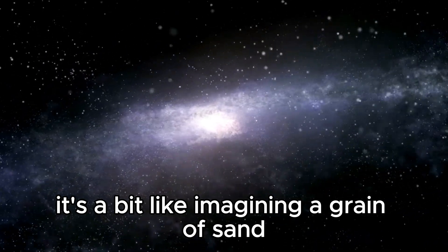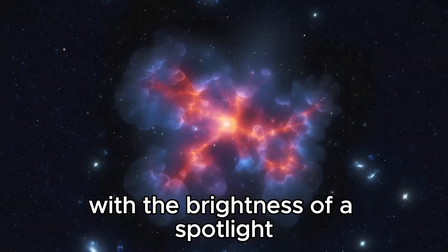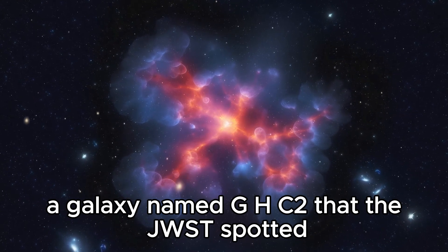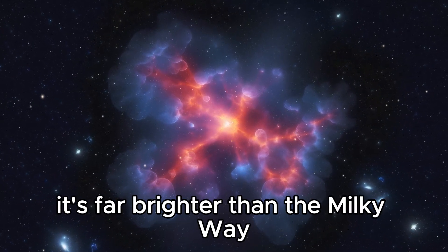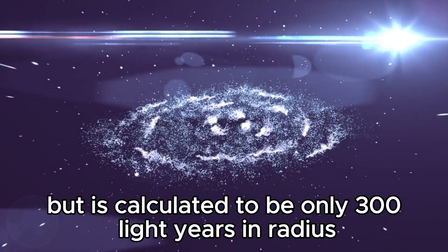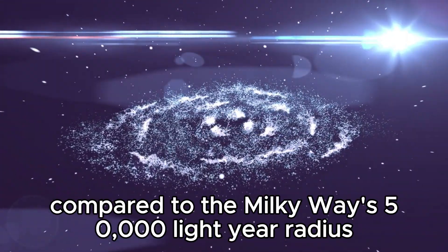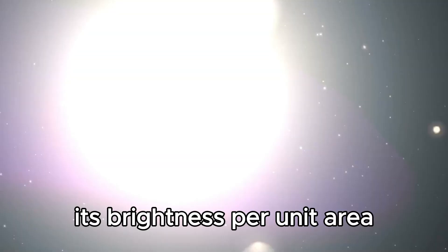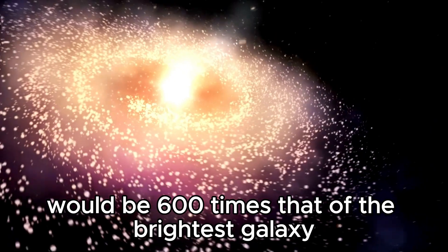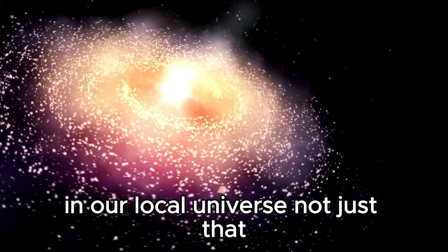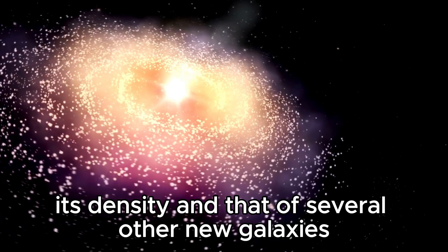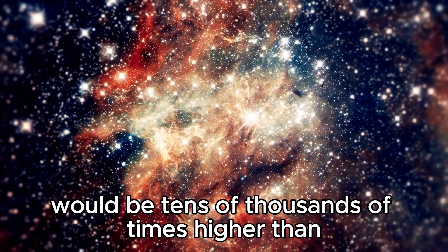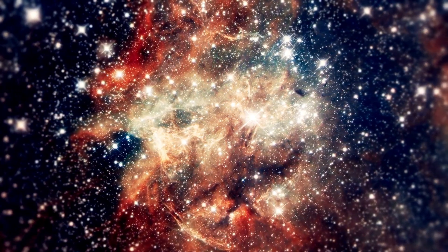These distant galaxies must be unimaginably small to counterbalance the supposed optical illusion created by an expanding universe. It's a bit like imagining a grain of sand with the brightness of a spotlight. Take, for instance, a galaxy named GHC2 that the JWST spotted. It's far brighter than the Milky Way but is calculated to be only 300 light-years in radius compared to the Milky Way's 50,000 light-year radius. Its brightness per unit area would be 600 times that of the brightest galaxy in our local universe.